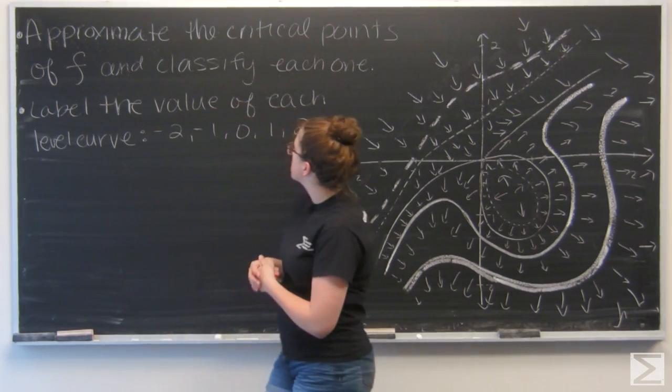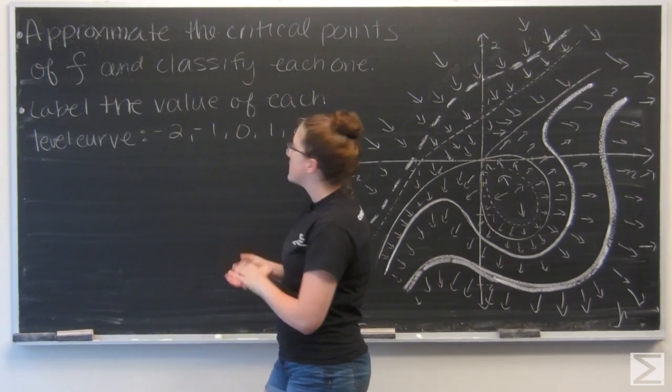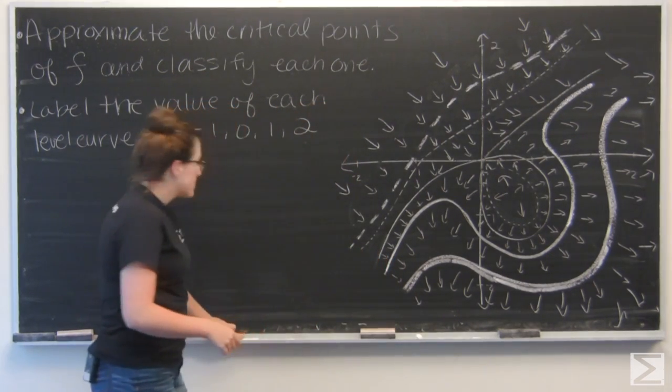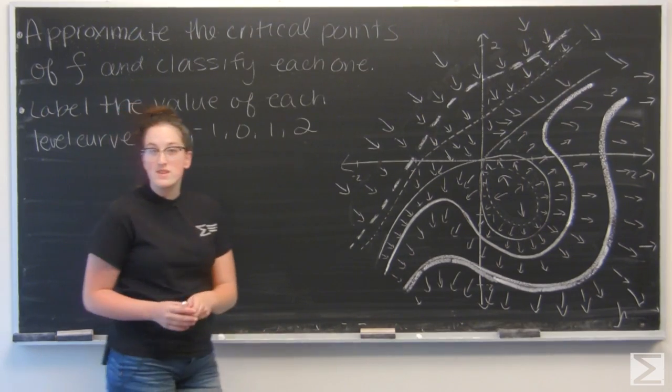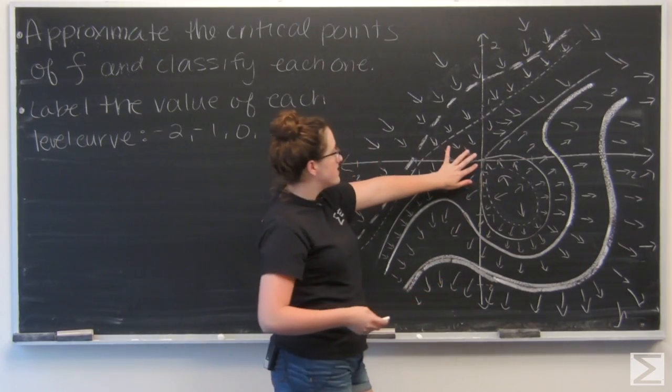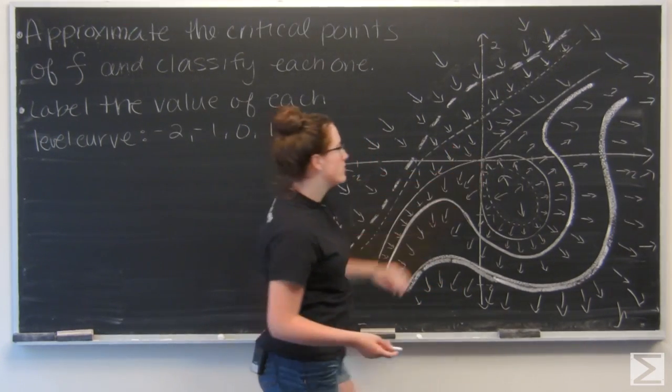First, I want to approximate the critical points of f and classify each one. Well, I see two points that are going to be critical points, and the first one is at the origin. So right here, where the level curves cross themselves, that's going to be a saddle point.